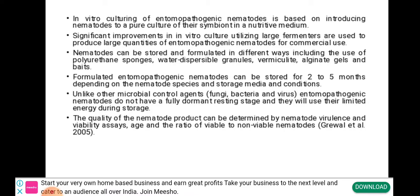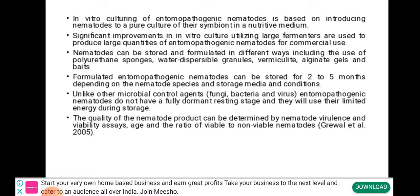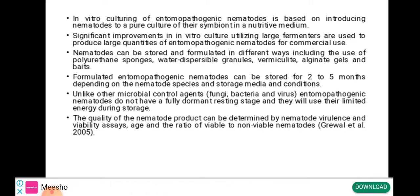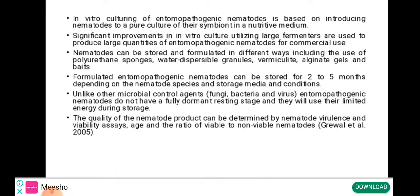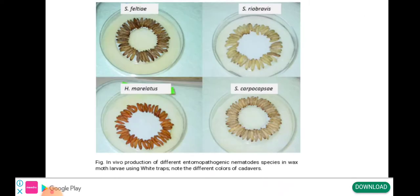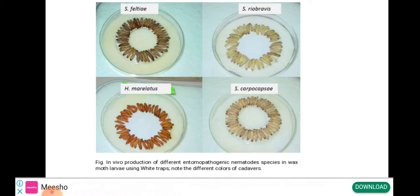Nematodes can be stored and formulated in different ways, including polyurethane sponges, water-dispersible granules, vermiculite, alginate gels, and wheat. Formulated EPNs can be stored for 2 to 5 months depending on the species, storage media, and conditions. Unlike microbial control agents, EPNs do not have a fully dormant resting stage and will use their limited energy during storage. This figure shows in vivo production of EPN species in wax moth larvae using the White Trap method — note the different colors of the cadavers.